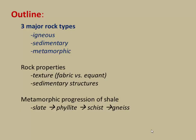In this video I want to quickly recap the three major rock types — igneous, sedimentary, and metamorphic — and then talk about two main rock properties that can be used to distinguish these: texture and sedimentary structure. I'll finish the video with the classic example of the metamorphic progression of shale, which goes to slate, to phyllite, to schist, and to gneiss.